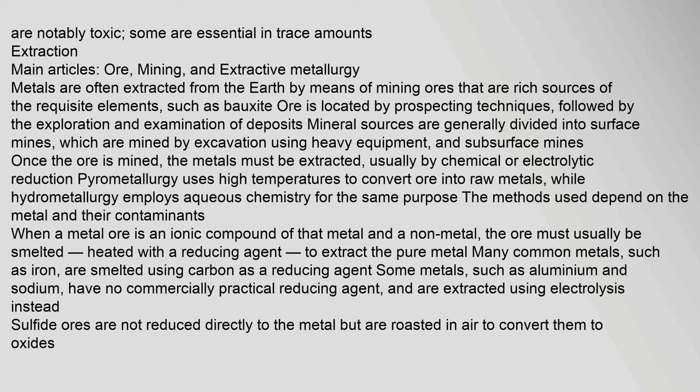When a metal ore is an ionic compound of that metal and a non-metal, the ore must usually be smelted — heated with a reducing agent — to extract the pure metal. Many common metals such as iron are smelted using carbon as a reducing agent. Some metals, such as aluminium and sodium, have no commercially practical reducing agent and are extracted using electrolysis instead. Sulfide ores are not reduced directly to the metal but are roasted in air to convert them to oxides.